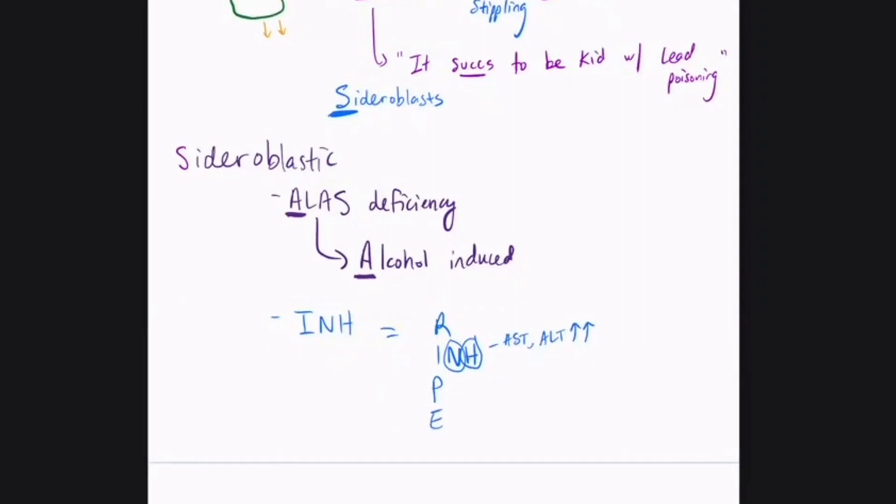So how does anemia present just in general? That's usually somebody that's fatigued, somebody that's really pale in the face looking. If you look at their inner eyelid, that's actually really pale oftentimes too.